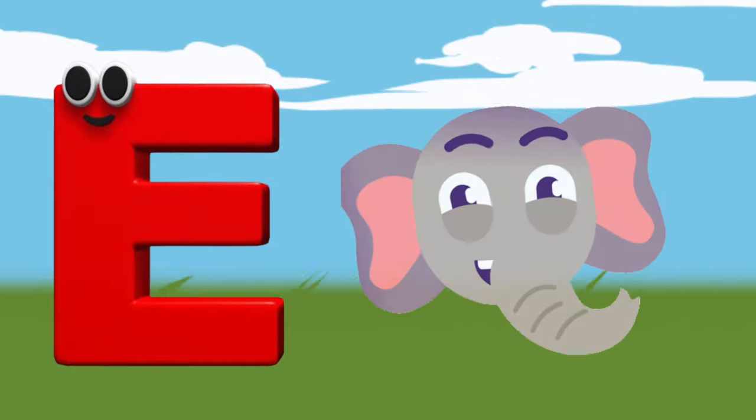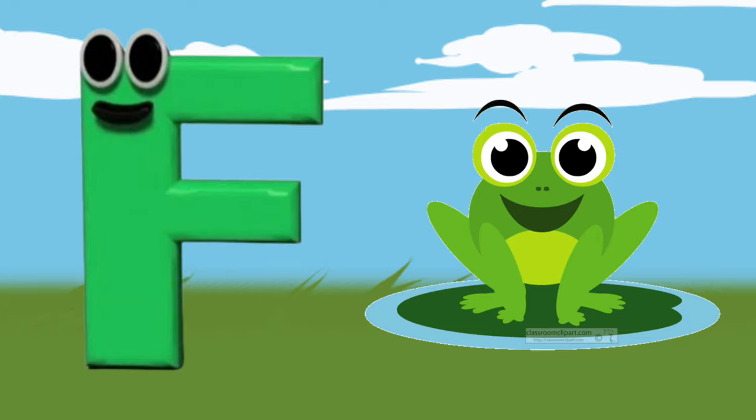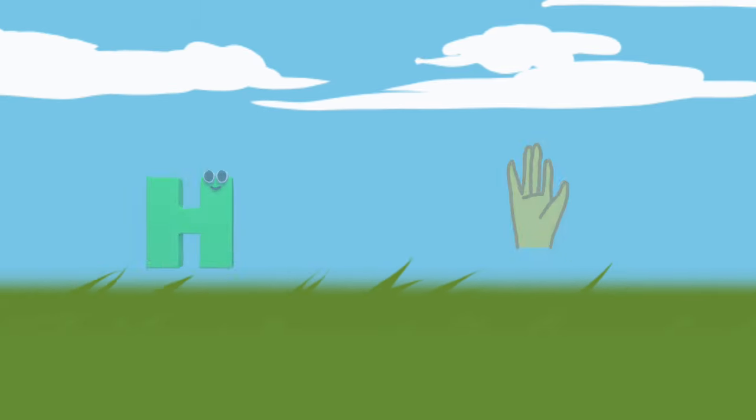E is for Elephant, e-e-Elephant. F is for Frog, f-f-Frog. G is for Goat, g-g-Goat. H is for Hand, h-h-Hand.